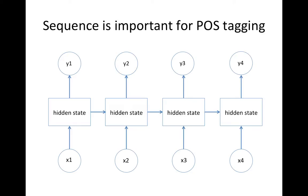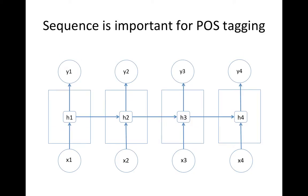Now let's take a look at the hidden states. I abbreviated the hidden states as h1, h2, h3, and h4. Importantly, you can see the output here is the same as the state here. Here is the main idea of this tutorial — you see, there are two weight values: WXH is a multiplier for the input, and WHH is a multiplier for the previous state.